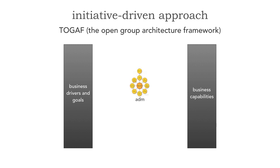Central to TOGAF is what used to be just TOGAF but is now more comprehensive — this is called the ADM, the Architecture Development Method. Think of this as an engine sitting there idle, the car's parked. When we get a business initiative — some sort of business need — that starts the engine and the car's running. We go through the whole ADM process, which creates business solutions and provides those capabilities.